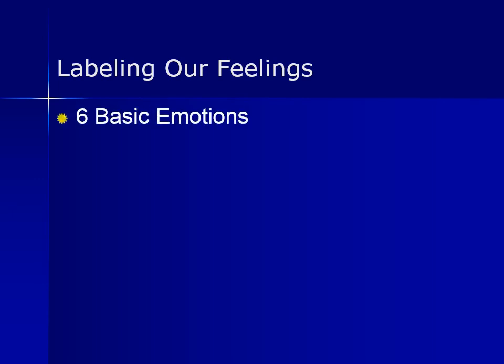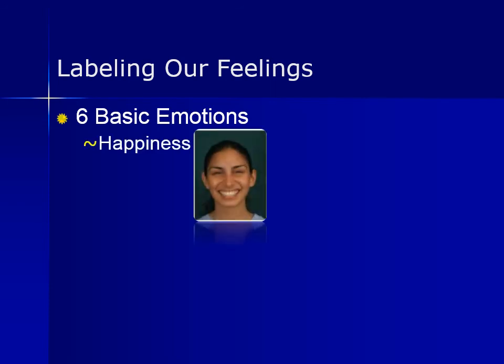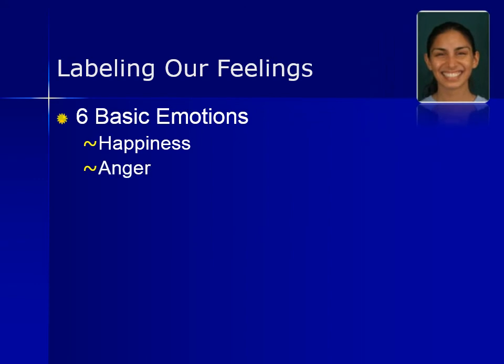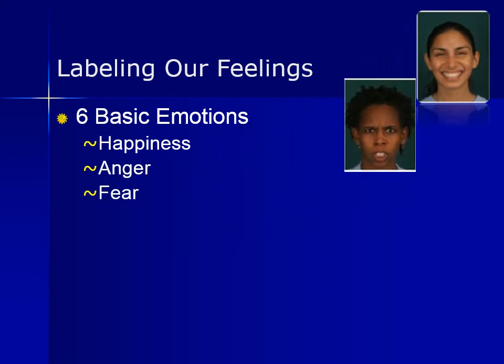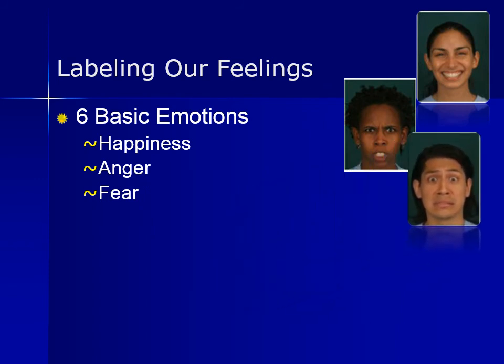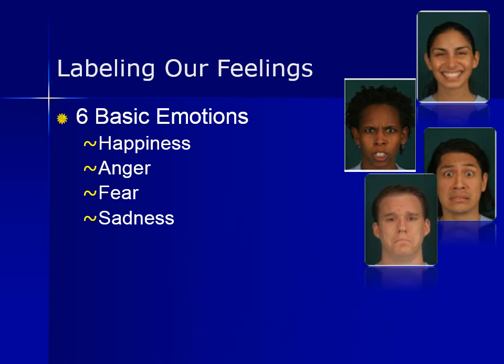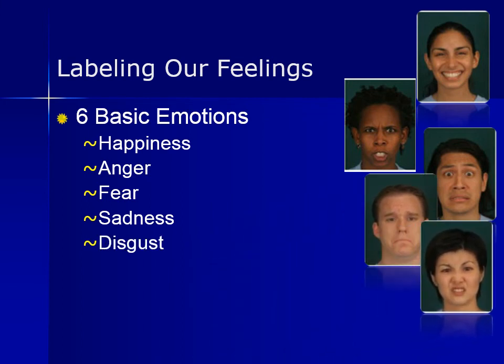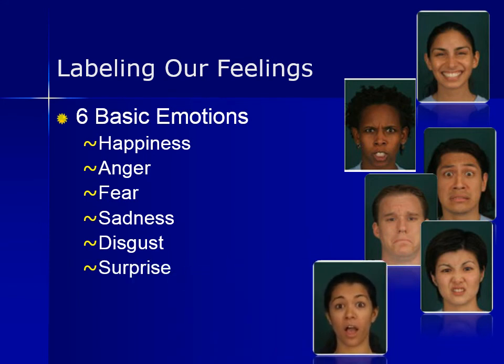Most researchers agree that there are six basic emotions that are universally recognized: happiness, anger, fear, sadness, disgust, and surprise. These six basic emotions mix and combine to form a variety of feelings. For example, as a sub-category of happiness, joy plus anticipation might combine to form optimism. We will be exploring these more in class with some activities and exercises.